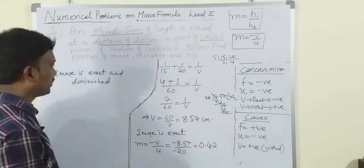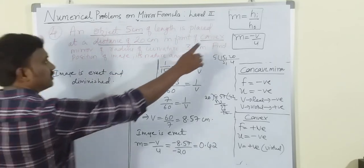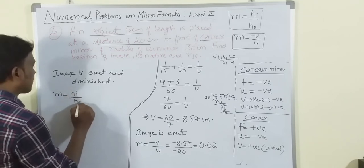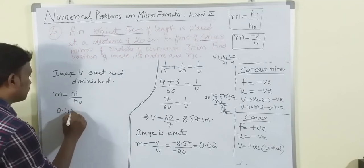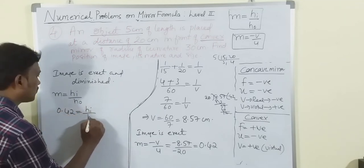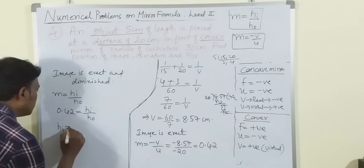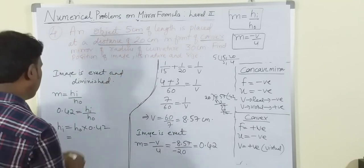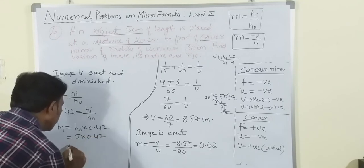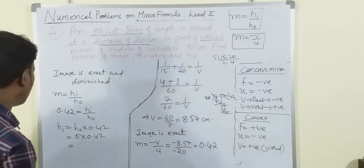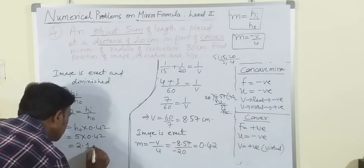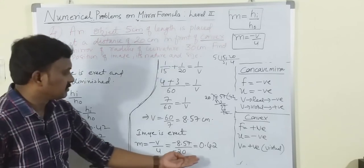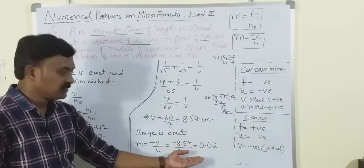Now finding the height of the image: m = h_i/h_o. So 0.42 = h_i/5, which gives h_i = 5 × 0.42 = 2.1 centimeters.